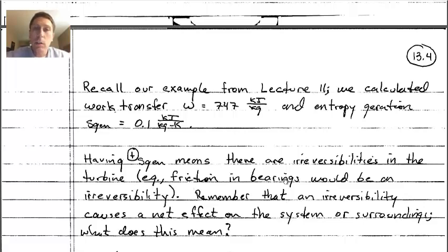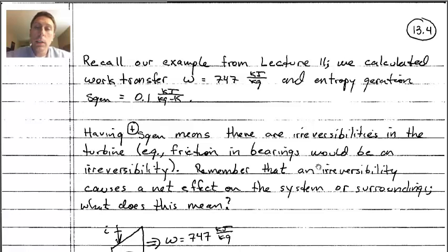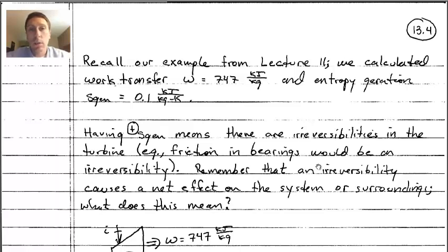Recall from the lecture on reversibility and irreversibility that an irreversibility causes a net effect on the system or the surroundings. Now that we're studying this in more detail, we can ask: what does that actually mean — what does it mean to cause a net effect on the system or the surroundings?